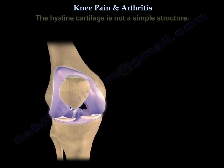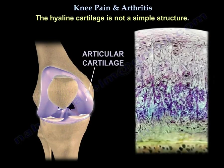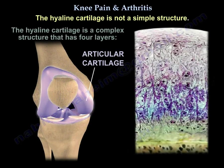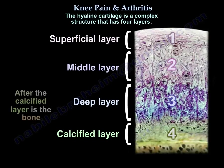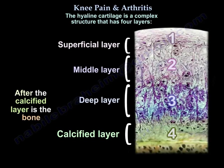The hyaline cartilage is not a simple structure. It is a complex structure that has four layers: a superficial layer, a middle layer, a deep layer, and a calcified layer. After the calcified layer is the bone.